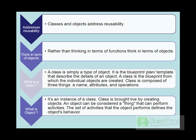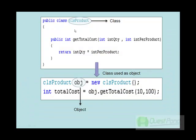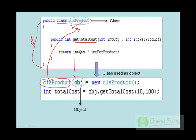Let's understand how you can write a class in C# and how you can create objects of classes. To define a class in C# we use the class keyword. You can see that we have defined a class called CLS product, and there is a function in this class called getTotalCost. This is our template. Now in order to use this template in your application or UI you need to create an object, so you can see that I have set CLS product — the class — and then use the new keyword to instantiate it.